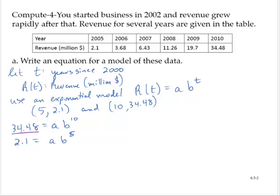Dividing through term-wise yields 34.48 over 2.1 is not a nice number. I'll just leave it like that. Just leave it as 34.48 over 2.1. The a's reduced out and we're left with b to the 5th on the right-hand side. And so then that implies that b is 34.48 over 2.1 to the 1/5th power.